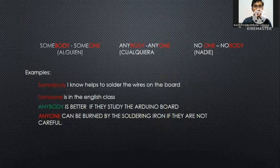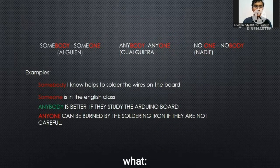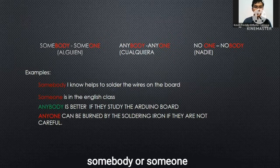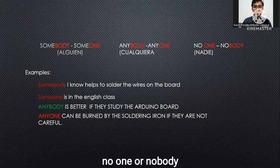When the pronoun has the ending '-body' or '-one,' it will refer to persons: somebody or someone, anybody or anyone, no one or nobody.